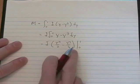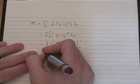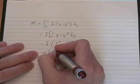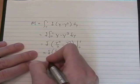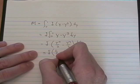We plug in zeros, nothing happens, this is gone. Plug in 1, we get 1 half minus 1 fourth, which is 1 fourth. So our mass is delta over 4.